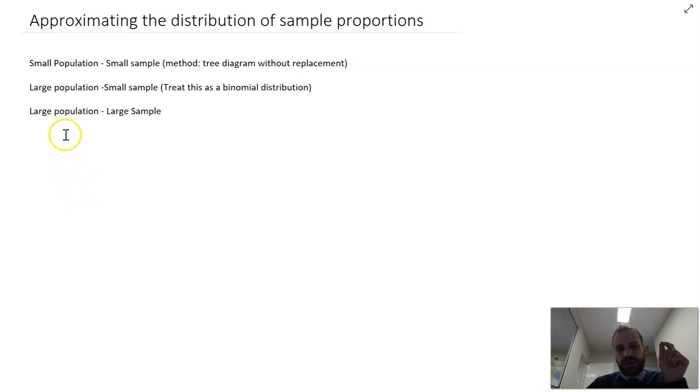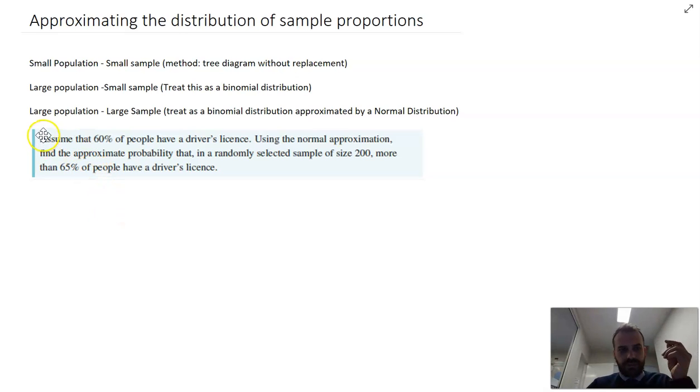What about large population, large sample? So what if the population is Australia, 25 million people, but what if you have some resources and you don't just survey 5 people, you survey 10,000 people? Well, we can still treat it as a binomial distribution, but what we know about binomial distributions is that for large experiments, we can essentially approximate them using the normal distribution. We'll jump into an example here.